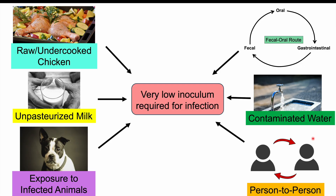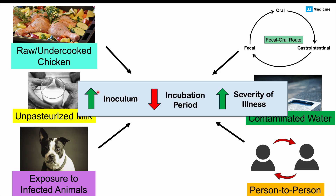A very low inoculum is required for infection — as low as 500 organisms can result in infection, though typically 1,000 to 10,000 bacteria are required. Campylobacter is somewhat sensitive to stomach acids. Individuals on antacids or with low stomach acidity — such as elderly patients or those taking proton pump inhibitors like pantoprazole — can be more likely to get infected or have worse infections. Increased inoculum or decreased gastric acidity leads to a shorter incubation period and more severe illness.